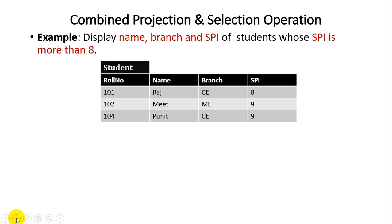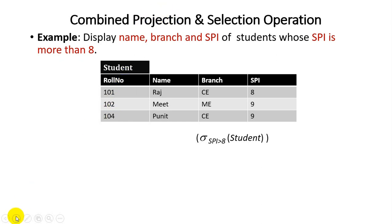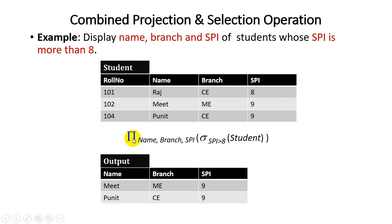Another example: display name, branch, and SPI of students whose SPI is more than eight. First we apply the selection condition — sigma SPI greater than eight on the student relation — to find students with SPI above eight. Then, since the user wants only three columns (name, branch, SPI) and not the roll number, we apply projection. Using the combination of projection and selection, we get the desired output.